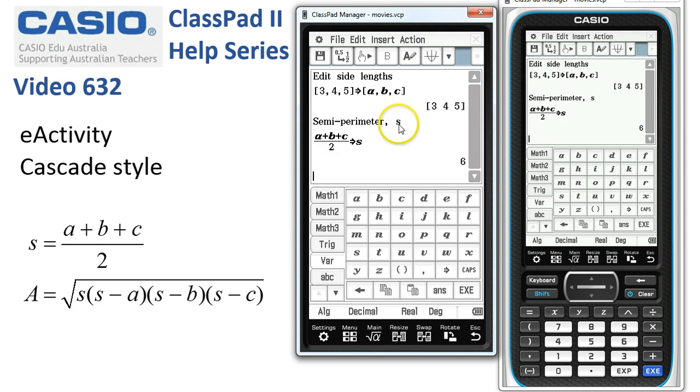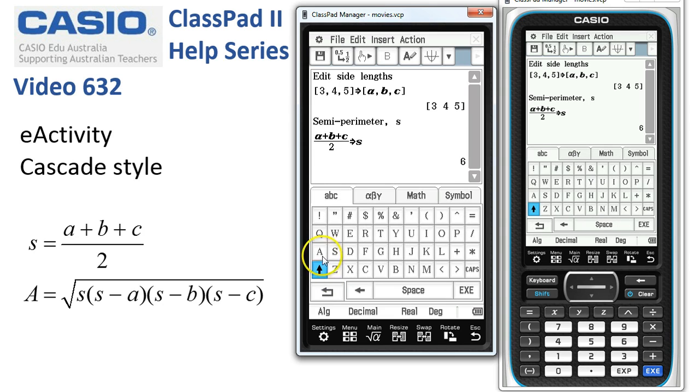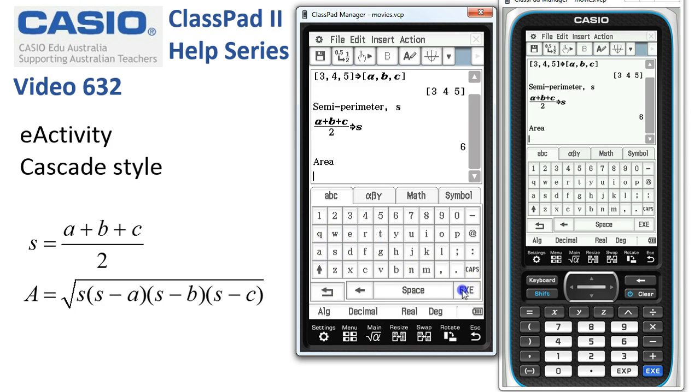We'll turn it back into a text line and say this is going to be the area. I'll type this in and press Execute and turn it back into a math strip, ready to calculate the area.